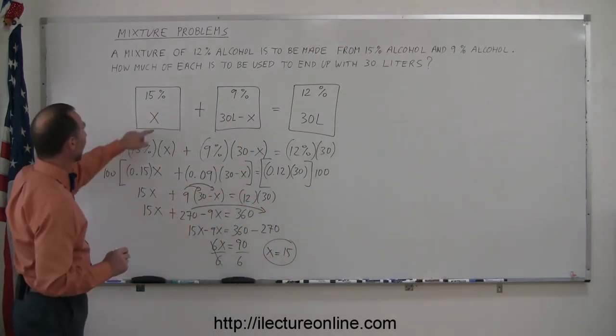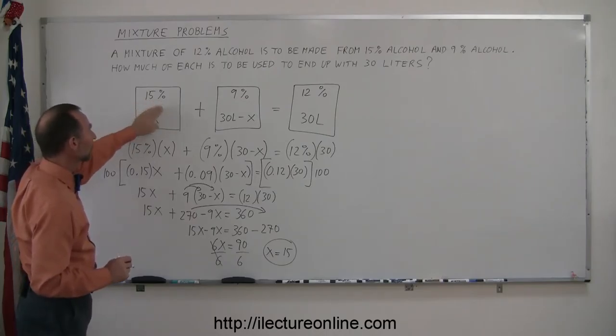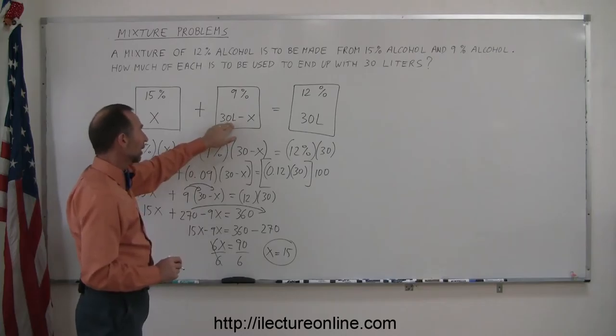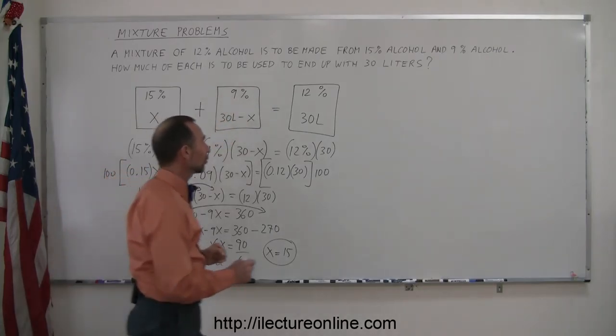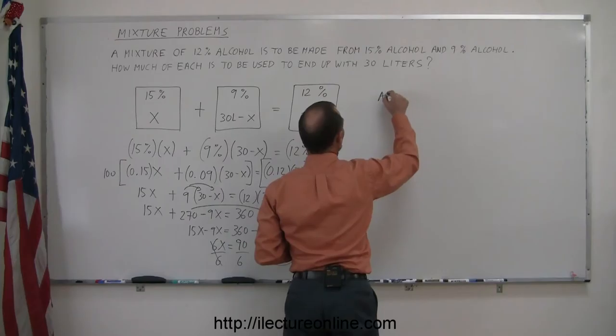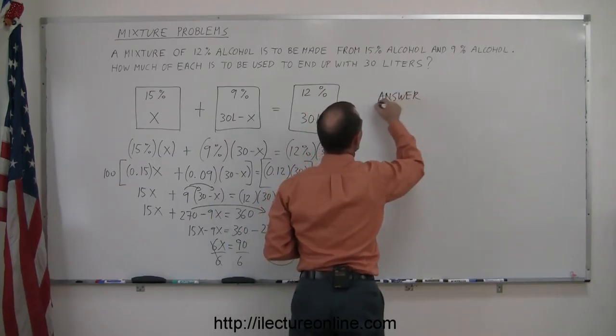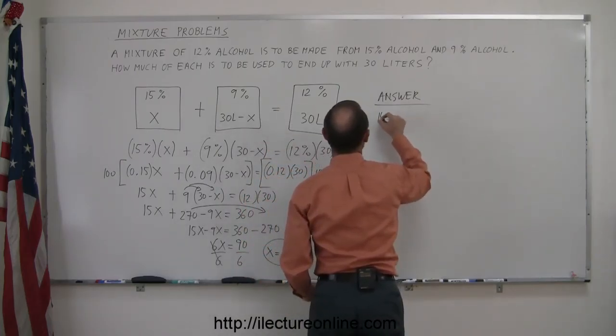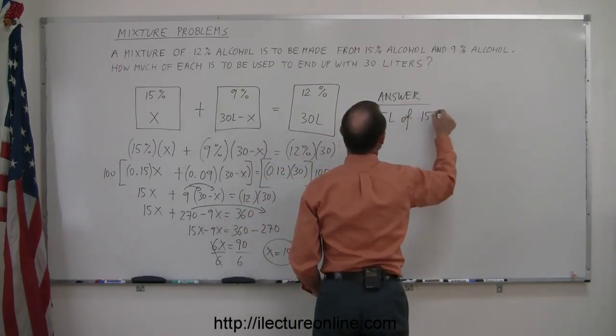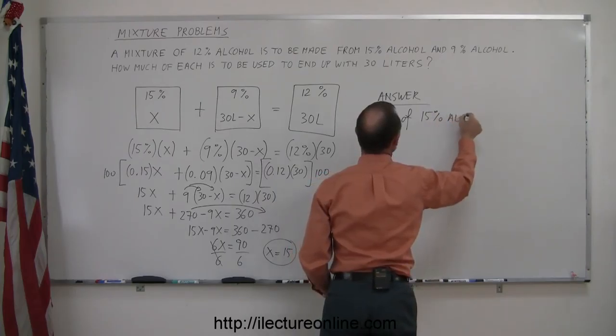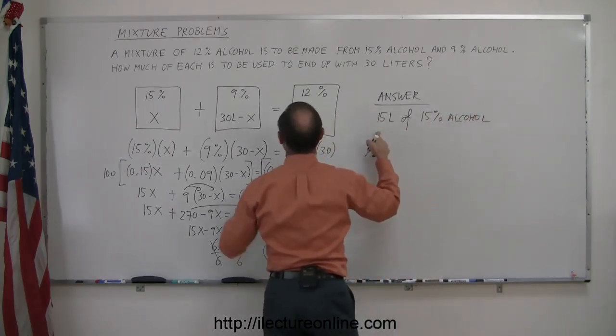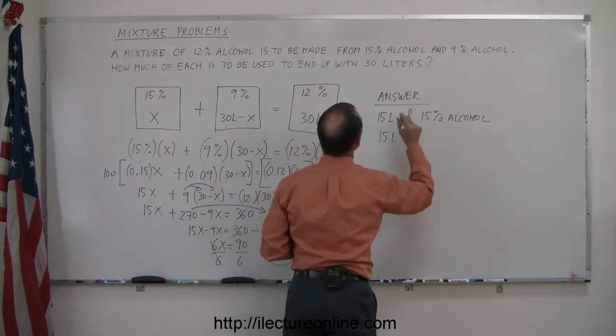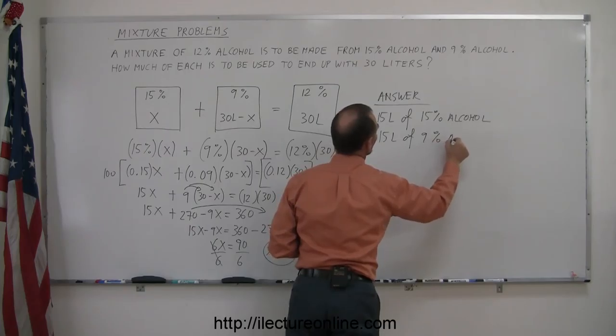Going back up here, x was the number of liters we had of the 15% solution and 30 minus x, since x is 15. Since x is 15, we also need 15 liters for the 9% solution. So the answer, since x is equal to 15, we need 15 liters of the 15% alcohol solution and 30 minus 15, that means 15 liters of the 9% alcohol solution.